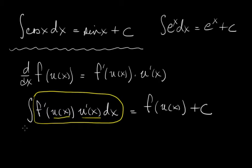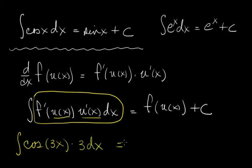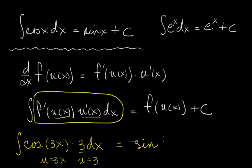Let's look at an example before defining anything else: the integral of cosine(3x) times 3 dx. Can you see what u is and what the derivative is? If u equals 3x, then u prime equals 3. So we have cosine of u(x) times u prime of x dx — the antiderivative will be sine(3x) plus a constant.